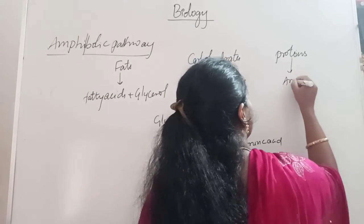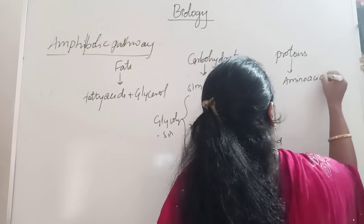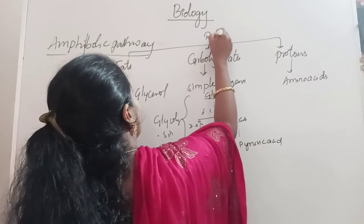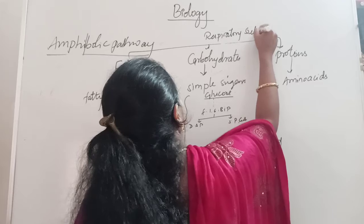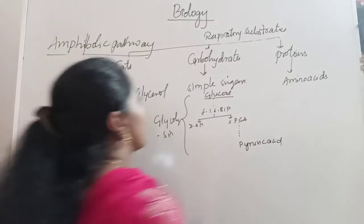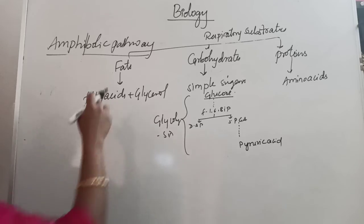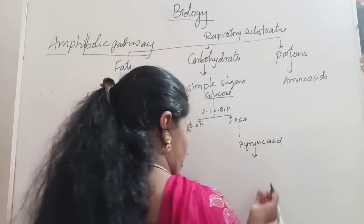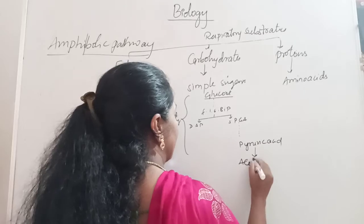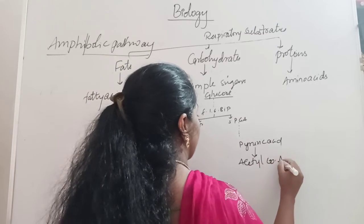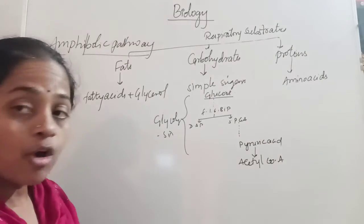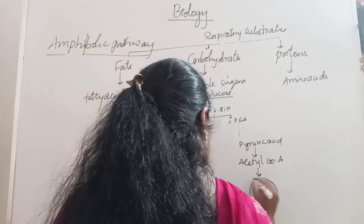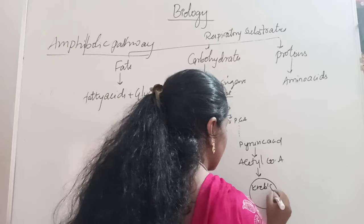Proteins are broken down into their simple components, which are amino acids. These three components — carbohydrates, fats, and proteins — are the respiratory substrates. Pyruvic acid undergoes oxidative decarboxylation to produce acetyl coenzyme A. Acetyl coenzyme A then undergoes the Krebs cycle.